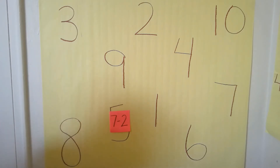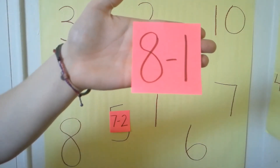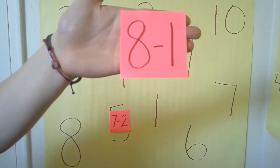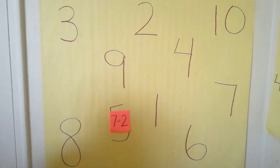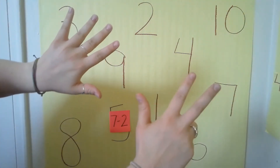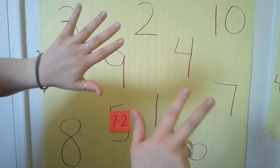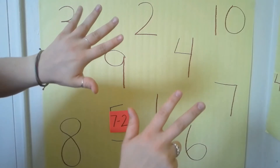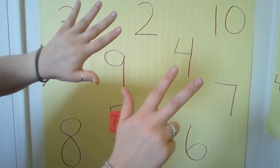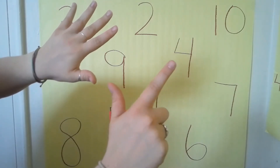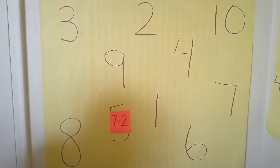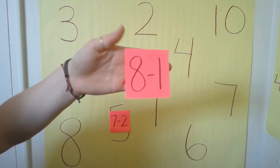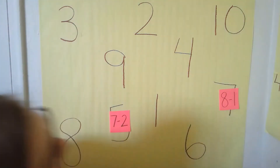Let's do the rest of the number sentences and try to find a number sentence for each of these numbers together. What does this number sentence say? Eight minus one. What's the answer for eight minus one? Let's check using our fingers. Put up eight fingers because that was the first number. How many are we going to take away? One, because our number sentence says eight minus one. So take one finger away. How many are left? Seven. So our answer to eight minus one is seven. I see the seven way over here. Nice job, let's keep going.